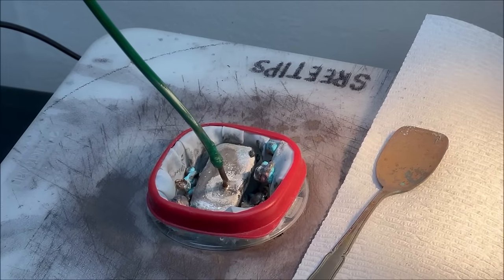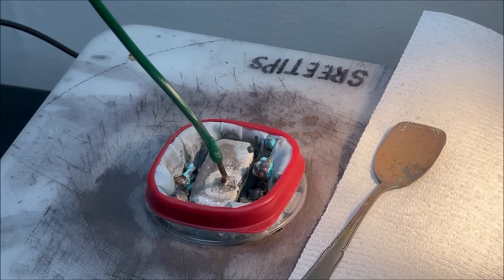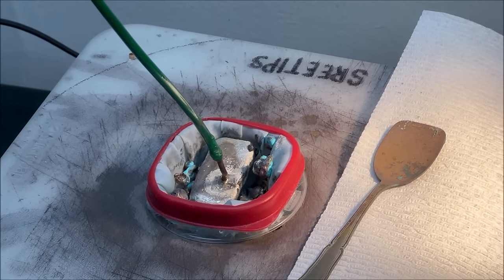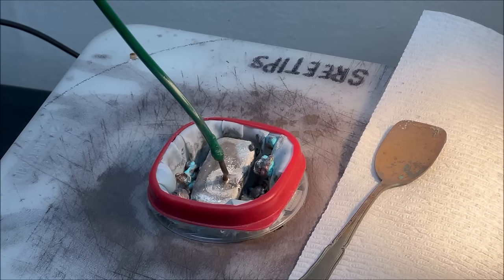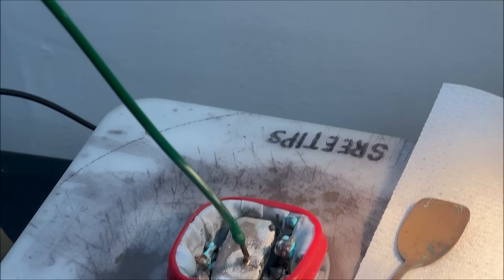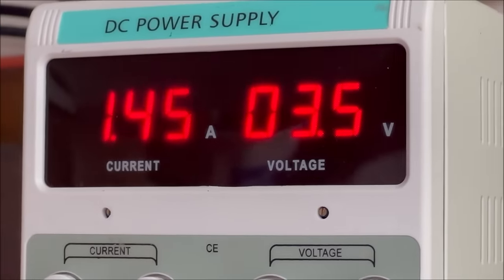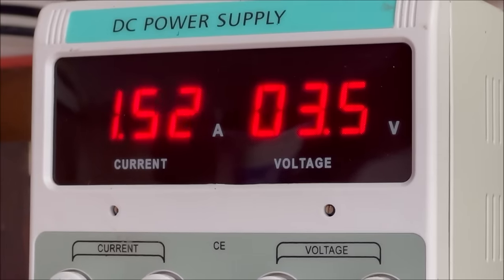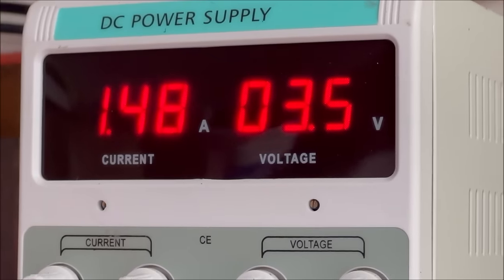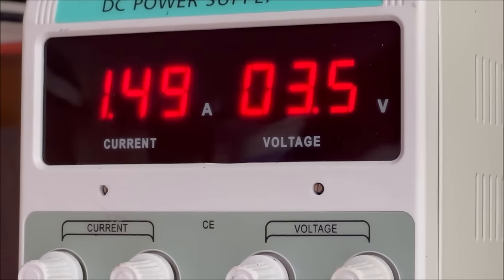Here you can see the silver in that anode filter basket has collapsed, just by me picking the lid up like that to look inside the cell. And when it does that, more silver comes in contact with the electrolyte, and the amps jump up. It went from 0.5 up to 1.5.